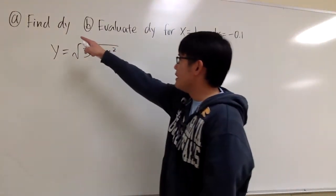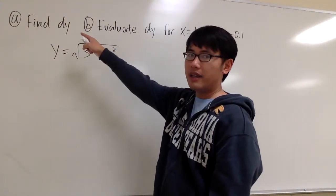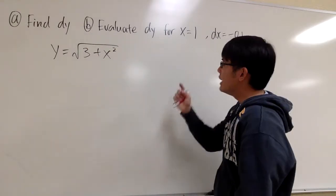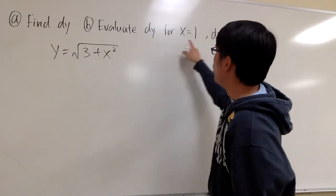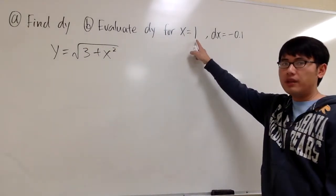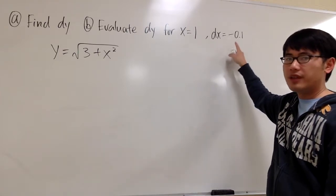Okay, for this question, we are going to find dy, the differential of y. That's the first part. And then secondly, after we have the formula for dy, we are going to plug in x equals 1 and dx equals negative 0.1.